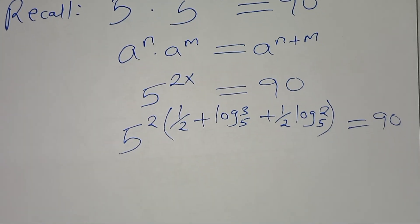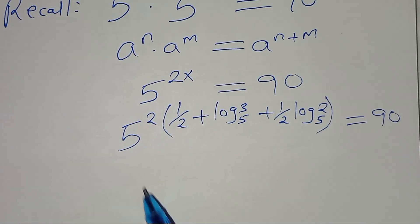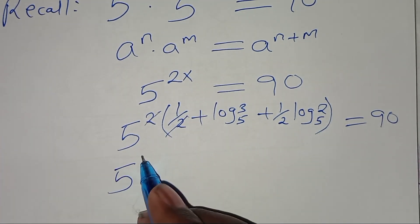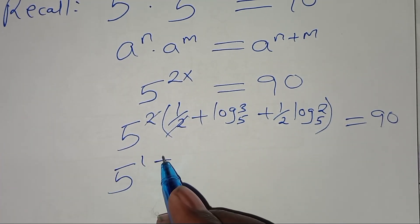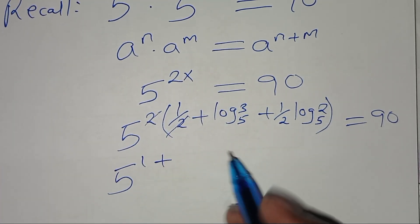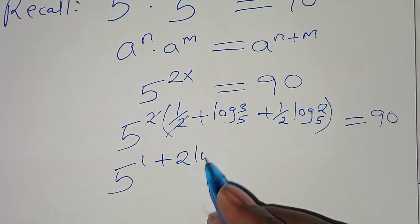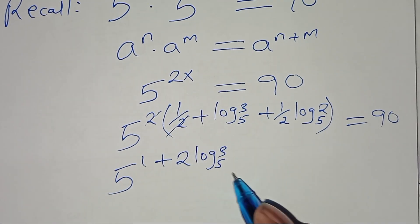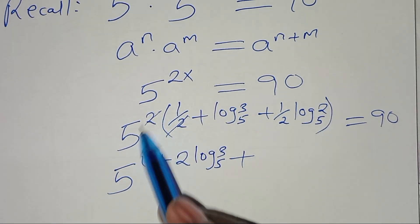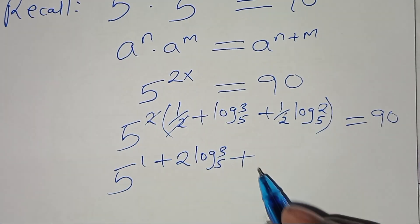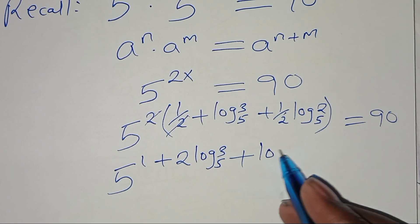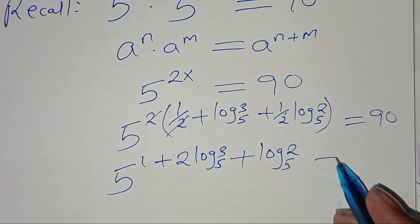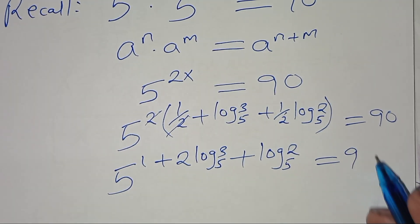Simplifying the exponent, we have 5 to the power 1, plus 2 times log base 5 of 3, plus — since 2 and 2 cancel — log base 5 of 2, and this gives a value of 90.